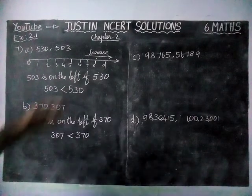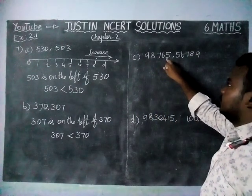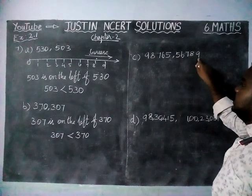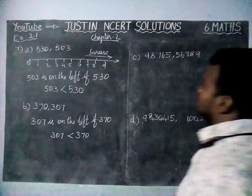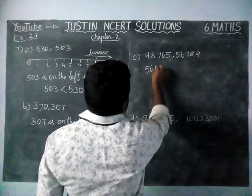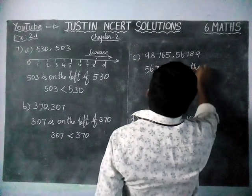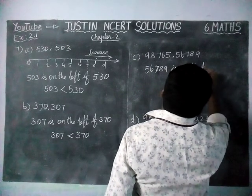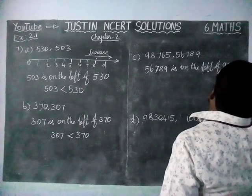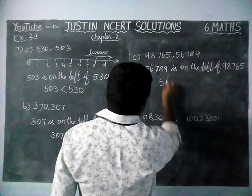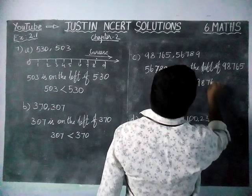Next, in the same way, we are going to solve option C. Here we are having 98,765 and 56,789. So 56,789 is the smallest number — it will come on the left hand side on the number line. 56,789 is on the left of 98,765, and using the sign: 56,789 is less than 98,765.